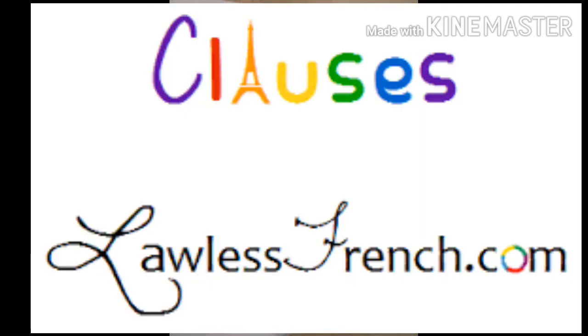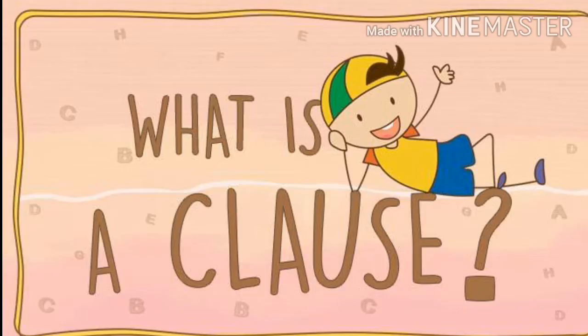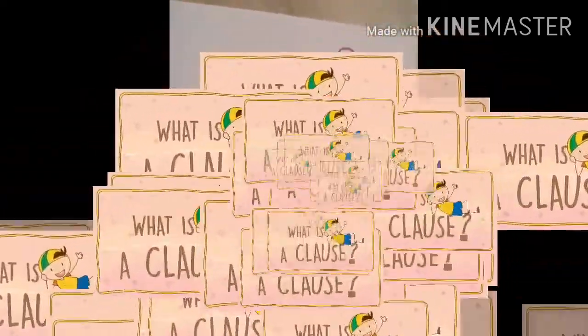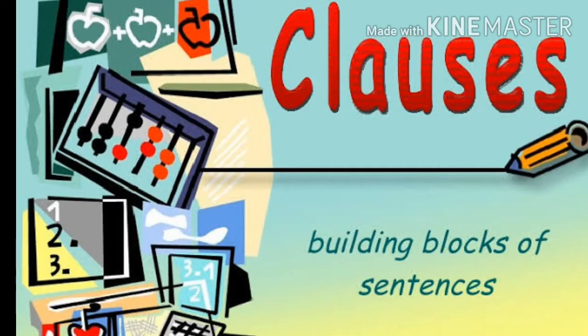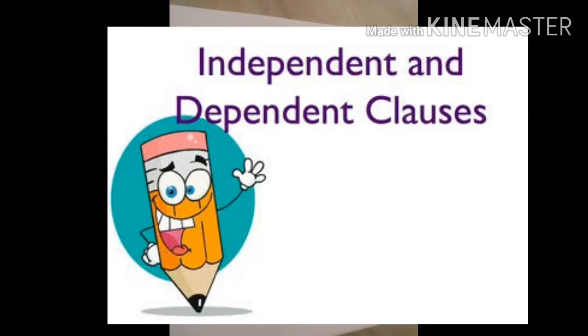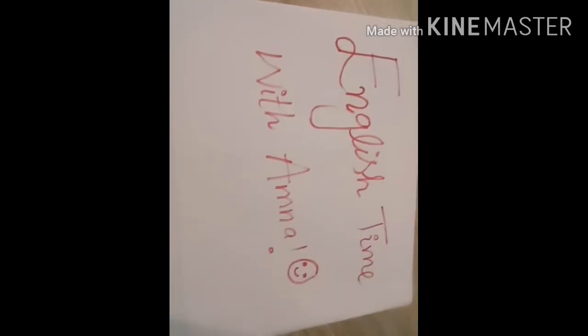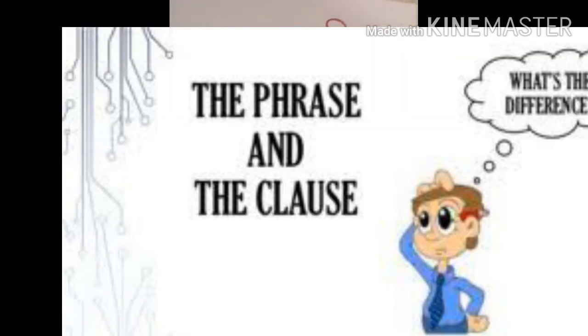Another part of sentence structure is a clause. A clause is a subject-and-verb combination — a group of words that have a subject and predicate. In a sentence, we may have two kinds of clauses: an independent clause and a dependent clause. An independent clause stands on its own and has its own complete meaning, whereas a dependent clause does not stand on its own and depends upon the independent clause.